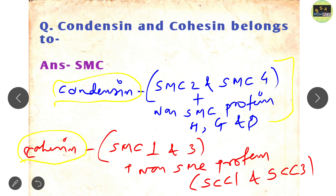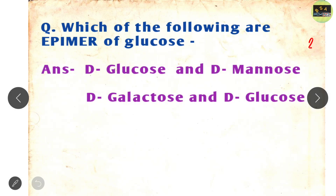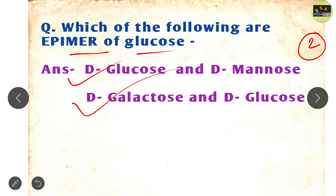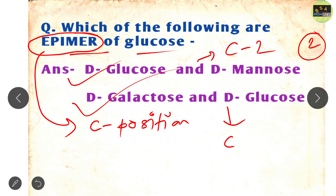The last question came in the MSQ biochemistry section and is worth 2 marks. It asks: which of the following are epimers of glucose? The two correct options are D-glucose and D-mannose, and D-galactose and D-glucose. Epimers differ with respect to a single carbon position. D-glucose and D-mannose differ at C2, while D-galactose and D-glucose differ at C4.